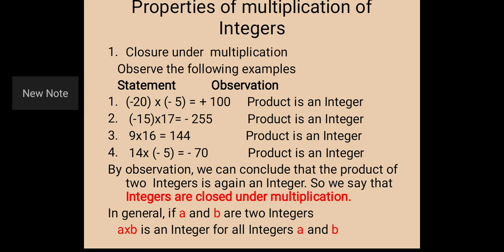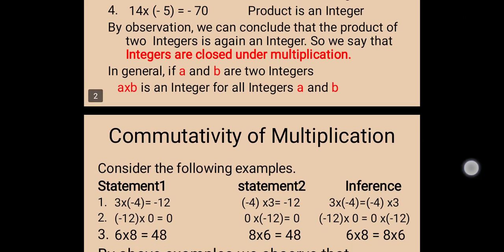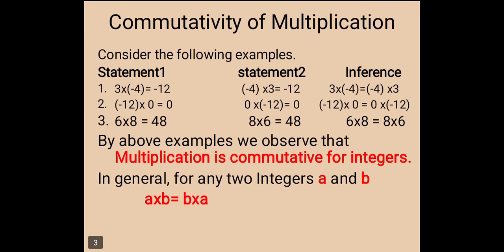Next, I will go to another property: commutativity of multiplication. Consider the following examples. 3 into minus 4 is equal to minus 12, and minus 4 into 3 is equal to minus 12. We observe that 3 into minus 4 is equal to minus 4 into 3.